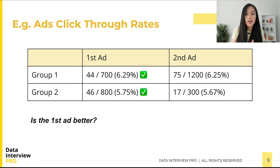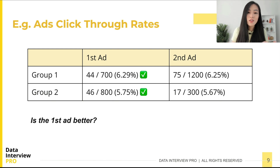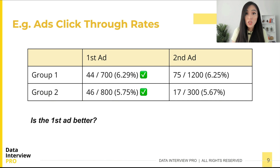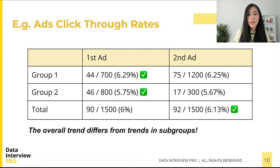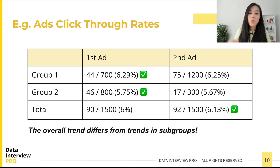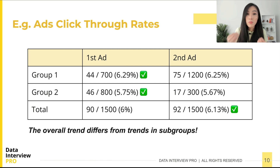Looking at the data in both groups, the click-through rate is higher for the first ad than the second in group one: 44 over 700 for ad one is larger than 75 over 1200 for ad two. In group two, 46 over 800 for ad one is larger than 17 over 300 for ad two. Based on this analysis we are tempted to conclude that the first ad is better — until we look at the two groups together and see that the first ad actually has a lower overall click-through rate. The overall trend differs from the trends in the segments, which illustrates why Simpson's Paradox can be an issue.